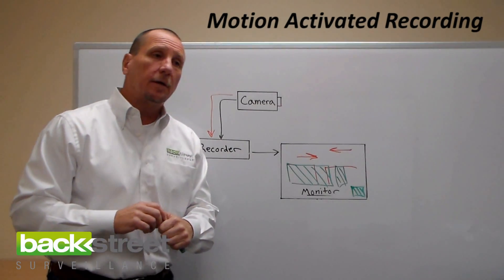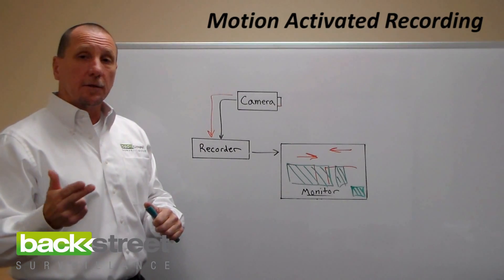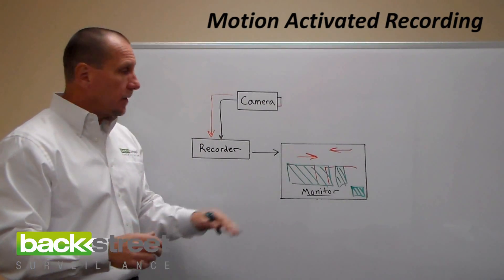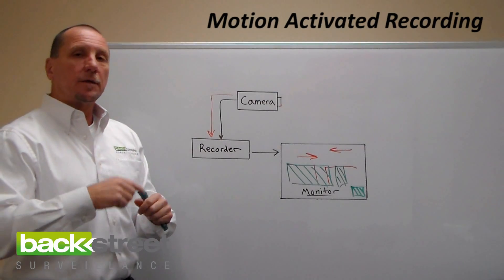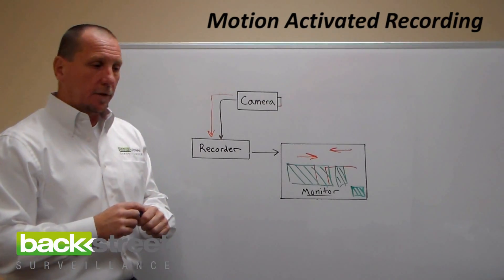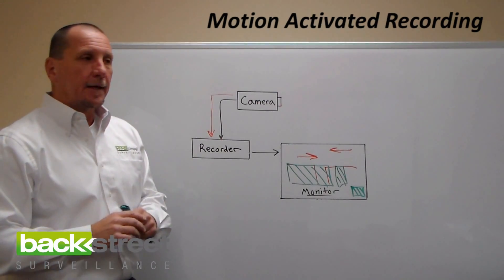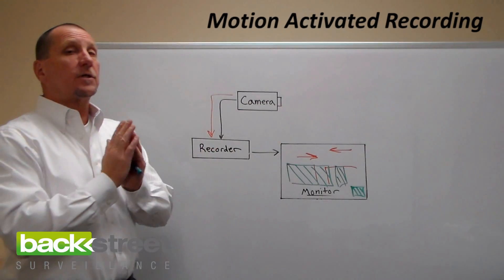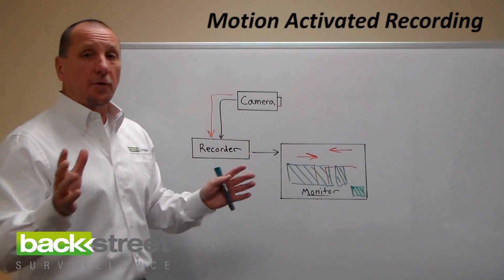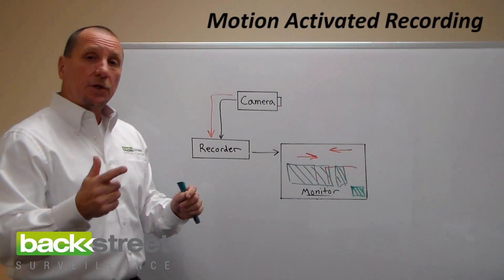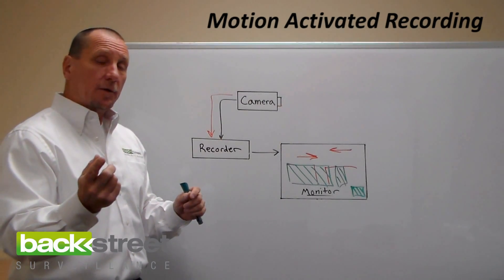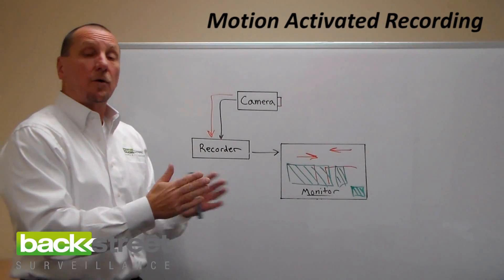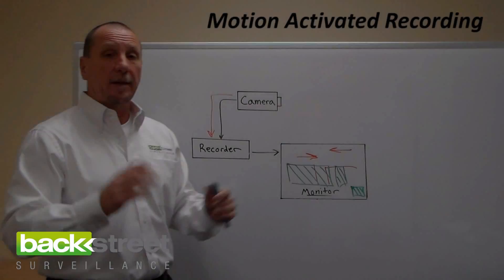There's another feature called remote motion alerts. When motion is detected during a certain time period on a certain camera, you can send an email with a picture of what triggered it. It doesn't send the whole video because HD video is huge data and it would slow everything down. It alerts you with a snapshot, and you can remotely log on and play back video to see the whole clip of what happened.